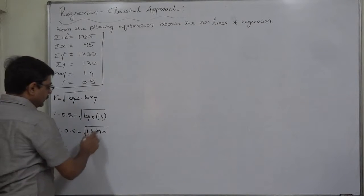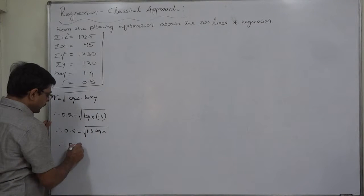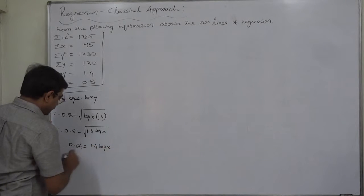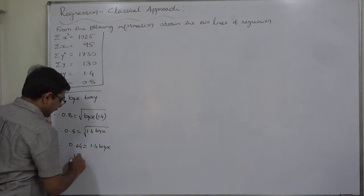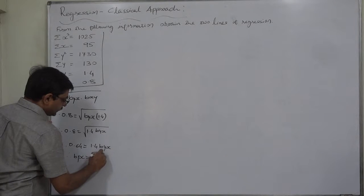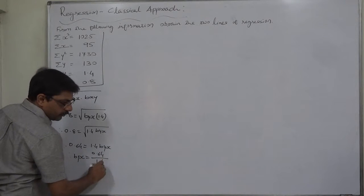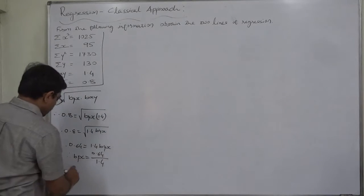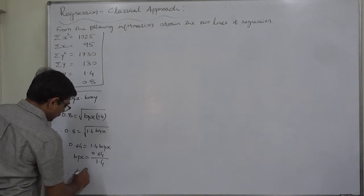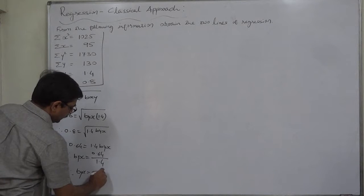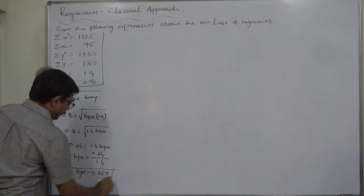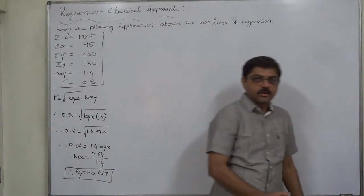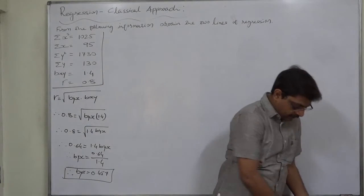Taking both sides squared: 0.64 equals 1.4 byx. That means byx = 0.64 divided by 1.4, which is 0.457. So very easily we found the other coefficient of regression, byx.